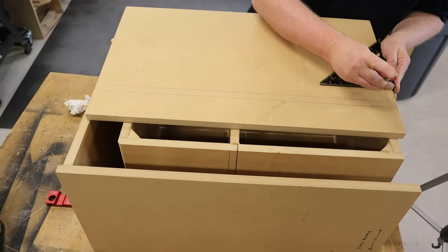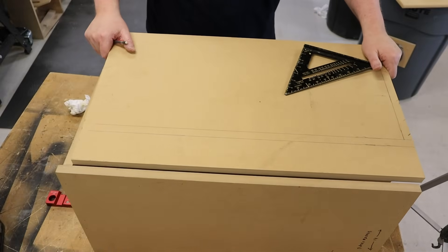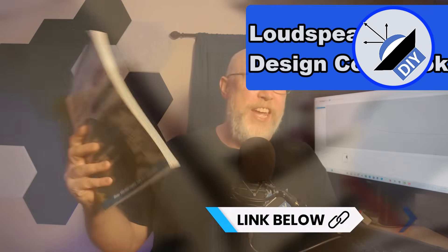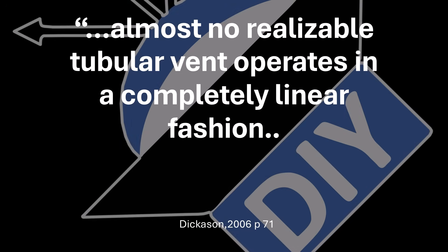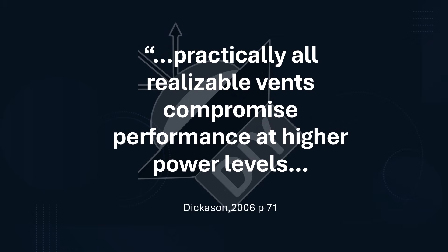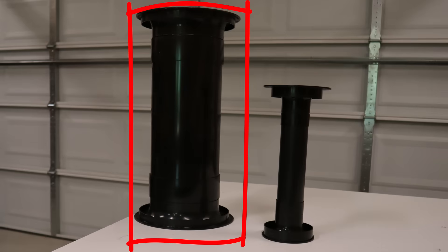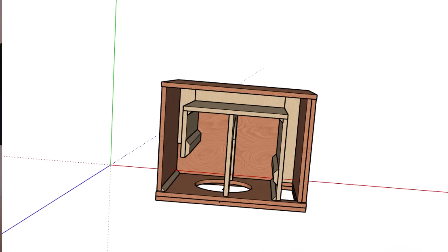These two formulas come from peer-reviewed scientific publications from back in the 70s. They've been well vetted and they should be reliable — the keyword being 'should.' What Dickinson did, instead of just taking their word for it, he ran a bunch of tests and concluded that both formulas yield vents that are too small. He went on to state that almost no realizable tubular vent operates in a completely linear fashion, and practically all realizable vents compromise performance at higher power levels. That means that as the power increases, the port performs worse in practically every measurable way, which can be solved by making the port cross-sectional area larger. But as the port cross-section gets larger, the port length has to go up, making it increasingly difficult to fit the port inside the enclosure.